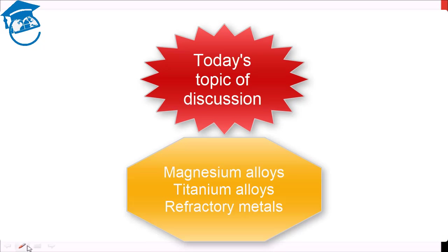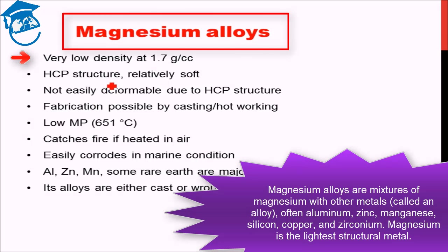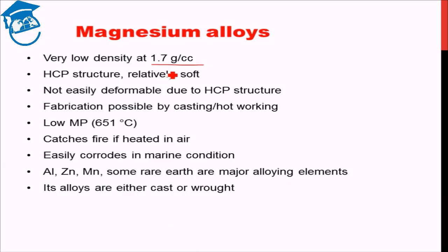The first metal we are going to discuss is magnesium alloys. The most important property of magnesium is its very low density — just 1.7 gram per cubic centimeter. Aluminium is 2.7 gram per cubic centimeter, and iron is close to 7.5 gram per cubic centimeter. So magnesium is practically one of the least dense metals that exists.